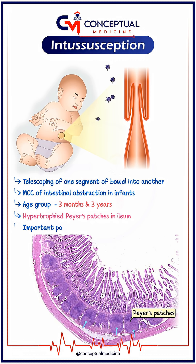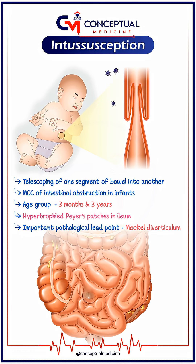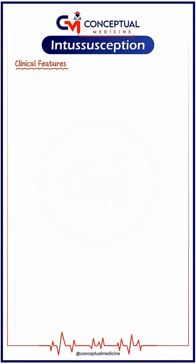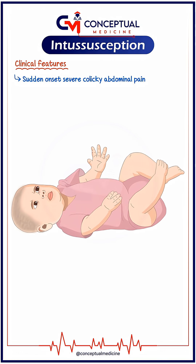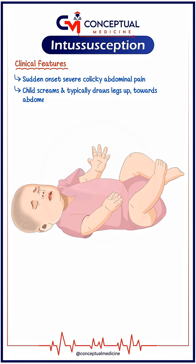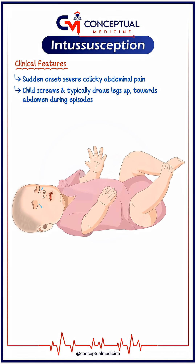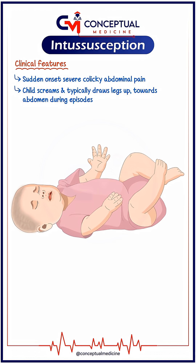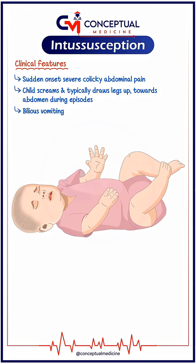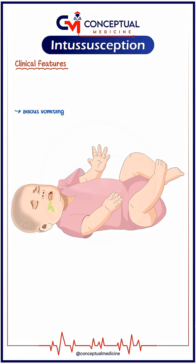Always remember the most important pathological lead point, which is Meckel's diverticulum. Clinically, the child presents with sudden onset severe colicky abdominal pain. The child screams and typically draws the legs up towards the abdomen during episodes. Bilious vomiting is a late feature.